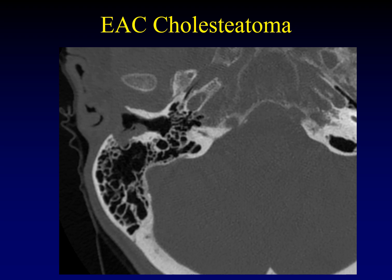Our next aggressive mass of the external auditory canal with bone erosion is a cholesteatoma. There should be a smooth line of cortex forming the posterior wall of the external auditory canal, but instead there is a gap and an odd soft tissue mass filling it. What's odd is that it has linear areas of gas intercalating into the tumor — almost as though there were layers that could be separated from one another. These are keratin layers separating within the walls of a cholesteatoma, just like an onion. Onions have layers, ogres have layers, and cholesteatomas have layers.